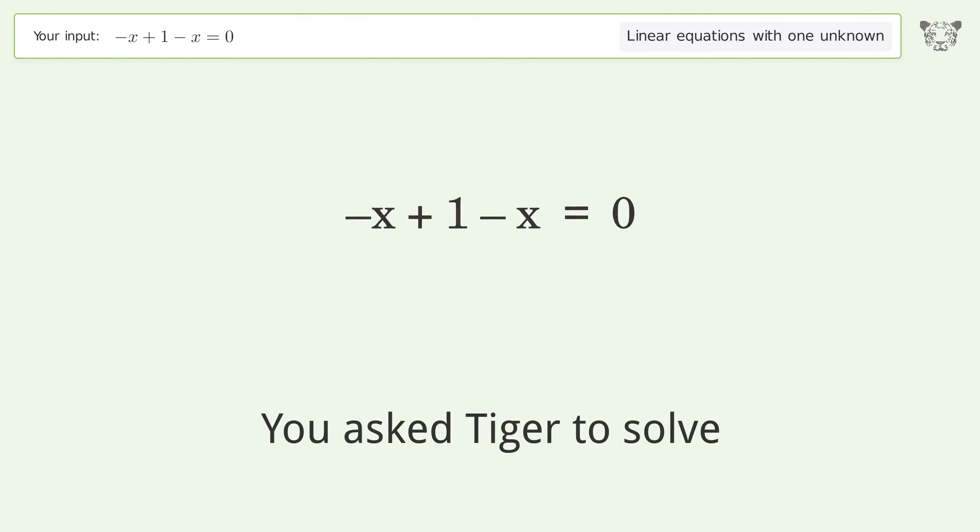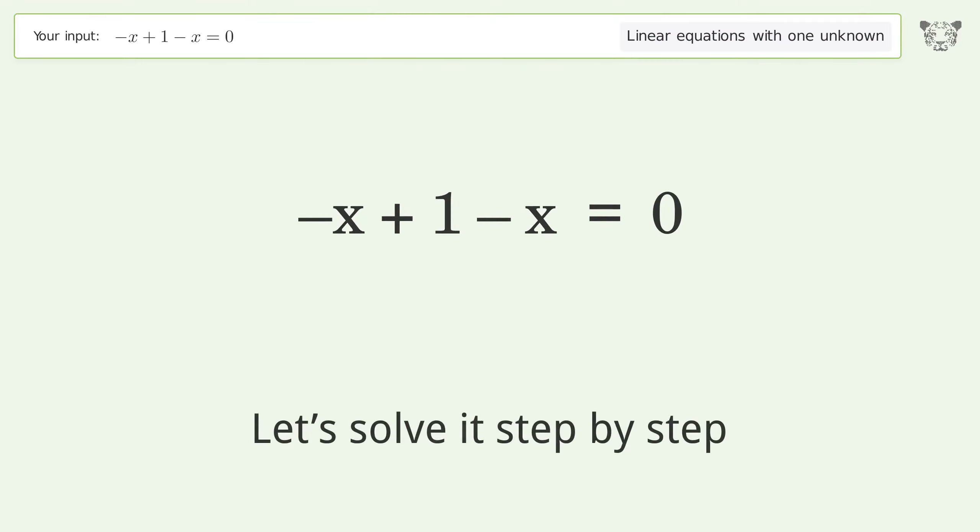You asked Tiger to solve this. This deals with linear equations with one unknown. The final result is x equals 1 over 2. Let's solve it step by step. Simplify the expression.